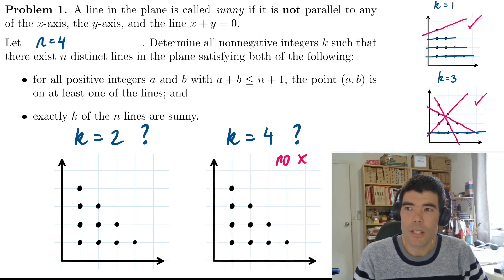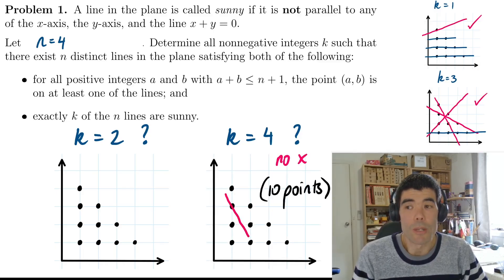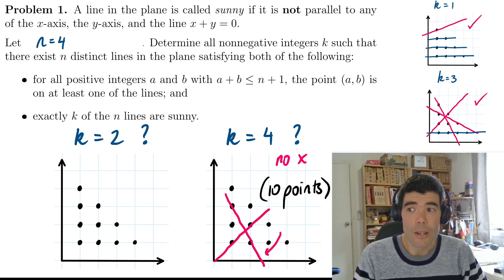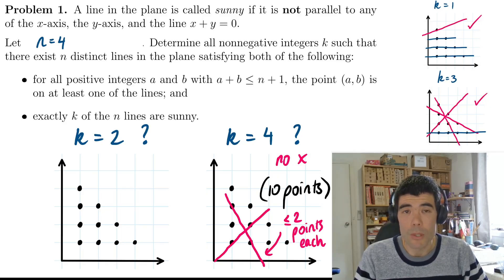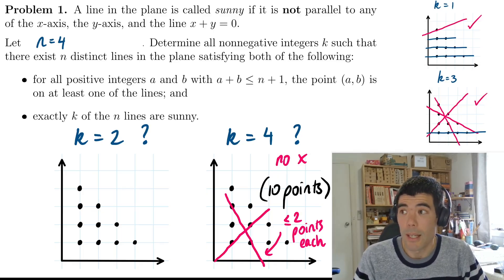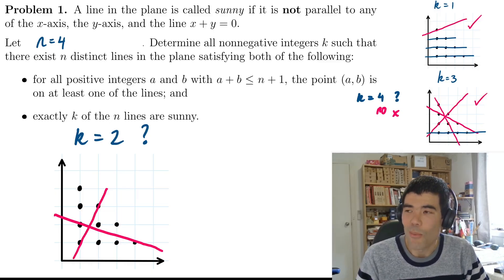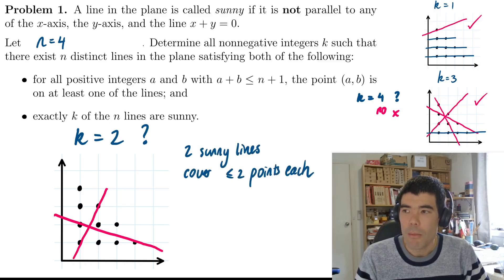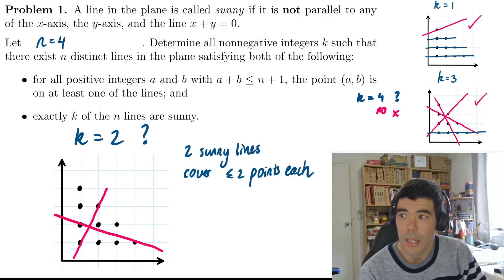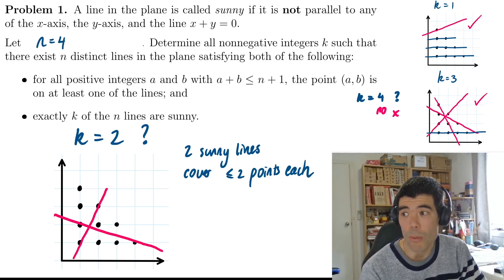k equals four is not going to be possible for n equals four because there are ten points and each sunny line can pass through at most two points. Four times two only covers eight points, so four sunny lines can't cover ten. Coming back to the k equals two case — after trying for a while I felt it wasn't possible, and I started thinking about a nice proof. Those two sunny lines can each cover at most two points.